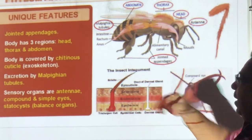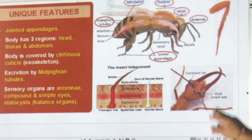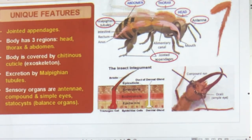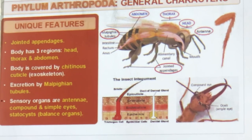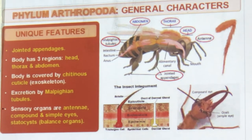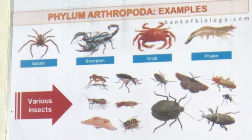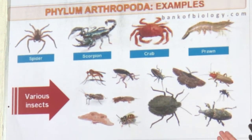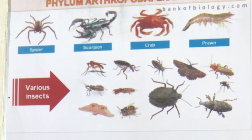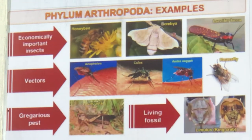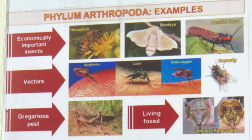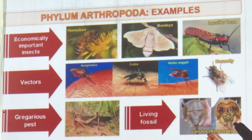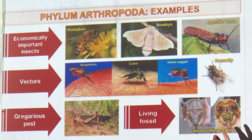They have balance organs and can fly. Compound and simple eyes are both present. Bristles — little hair-like things — come out. Examples: spider, scorpion, crab, prawn, and all insects. Arthro means joint; poda means feet — jointed feet. Also: honeybee, Bombyx (silkworm), lac insect, Anopheles mosquito, Culex mosquito, Aedes mosquito, housefly, locust, and Limulus (king crab — a living fossil surviving from millions of years ago).